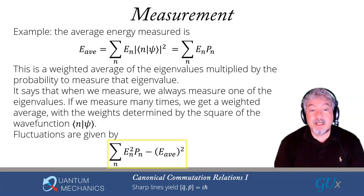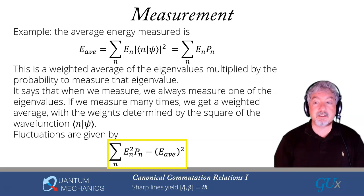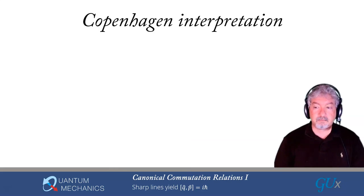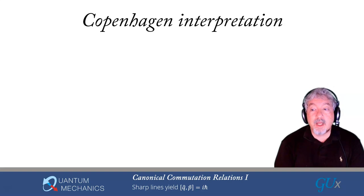Fluctuations are given by an expectation value of O squared, which in this case is H squared, and we evaluate it the exact same way. When H acts on n, it gives me En. So when H squared acts on n, it gives me En squared. So I'll get the sum over n of En squared times Pn. It's the same Pn, and then it's going to be minus this average energy quantity squared.